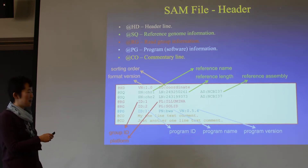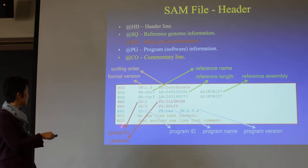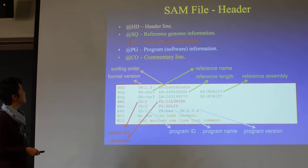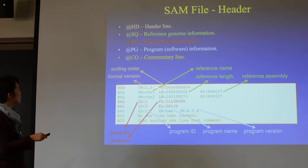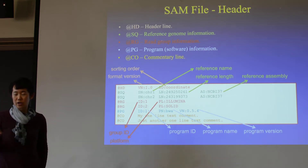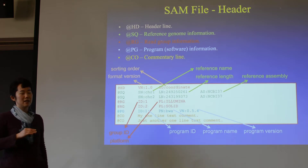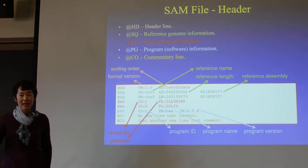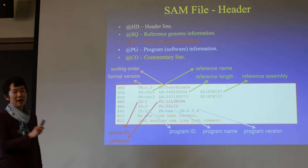The very beginning of the file has a number of headers. You can see these things in the header: the sort order, the format version, and the reference name. For example, GRCh37 is one version of the human genome assembly, and now you might be dealing with HG38, which is GRCh38.